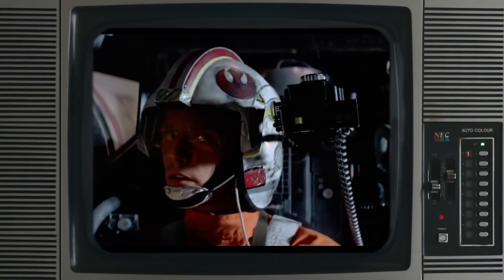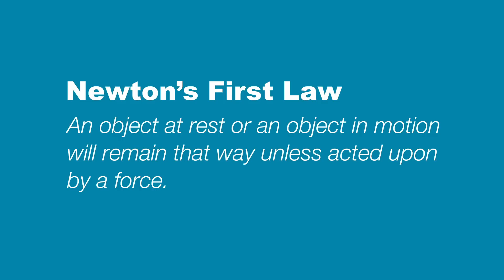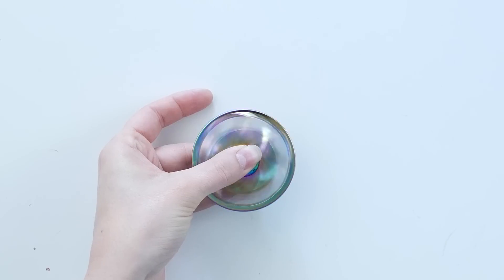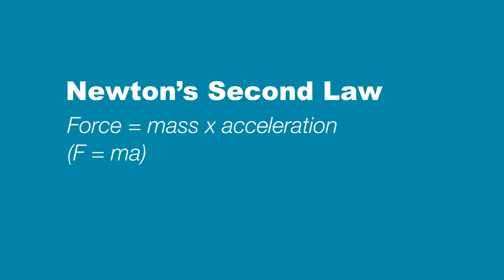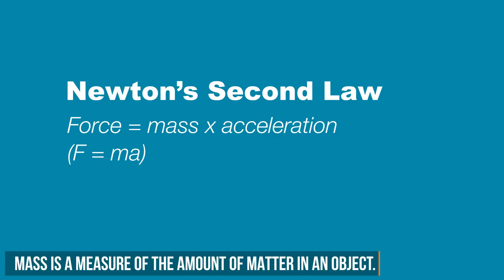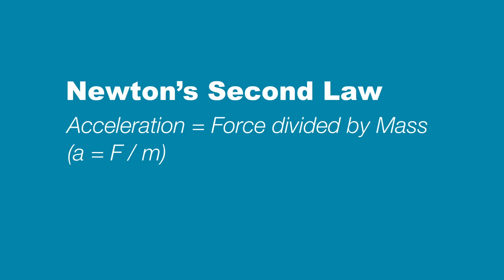Use the force, Luke. That's right — we need to consider force. Here we look at Newton's laws of motion. Newton's first law states: an object at rest or an object in motion will remain that way unless acted upon by a force. The force of flicking a finger will cause an object to accelerate, and the force of a finger touching a spinner causes it to decelerate. Newton's second law states: force equals mass times acceleration. We want to measure acceleration, so let's flip that around: acceleration equals force divided by mass. In other words, acceleration is the amount of force we need to move each unit of mass.